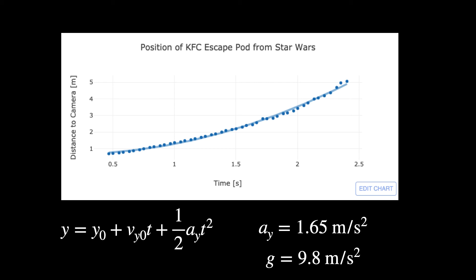So if I find that coefficient, multiply by two, I get 1.65 meters per second squared. That's the acceleration of the chicken bucket, which is not real. Gravity, if you have a free falling object, which that would be, would be 9.8 meters per second squared. Okay.